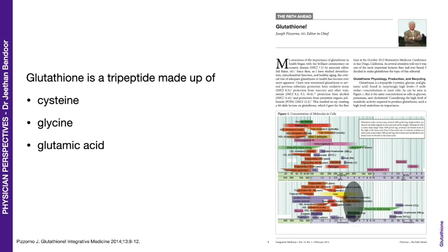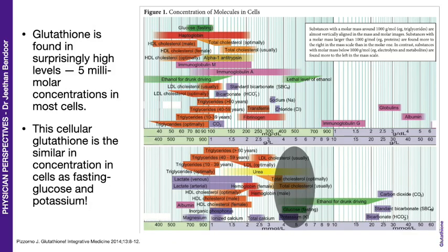Glutathione is a tripeptide made up of three amino acids: cysteine, glycine and glutamic acid. Glutathione is found in surprisingly high levels — 5 millimolar or more concentration in most cells. This cellular glutathione is similar in concentration to fasting glucose and potassium, making glutathione a very important molecule in almost all cells.